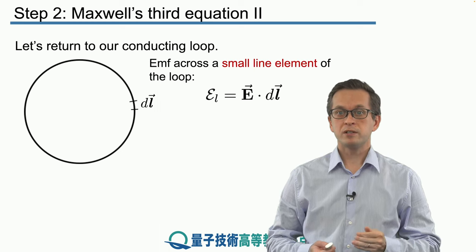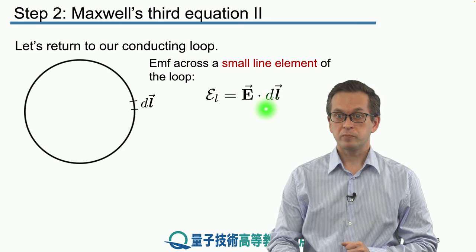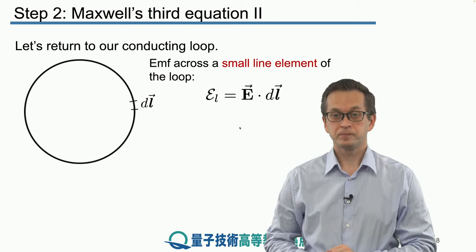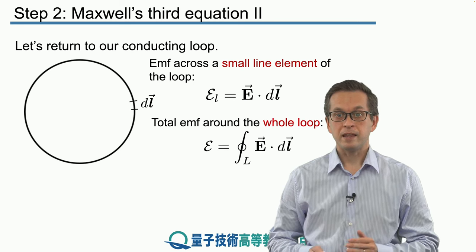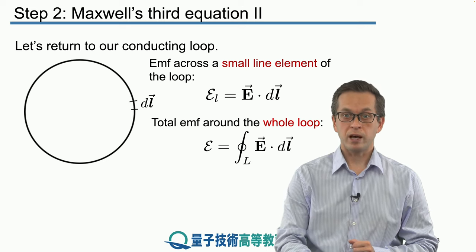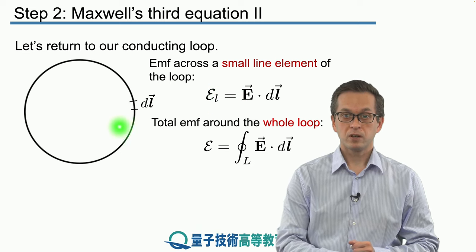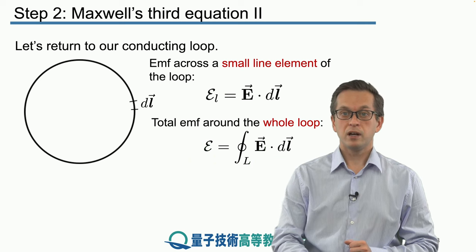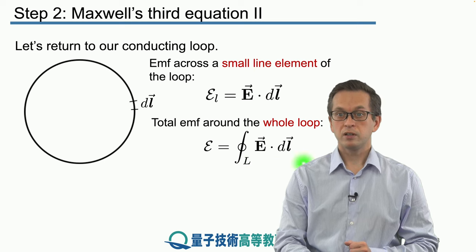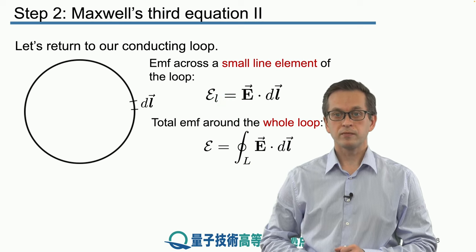And we ask, what's the EMF across this distance? Well, we can say that it's the electric field dot product with the segment of the loop dl. And now we want to know what is the total EMF across the whole loop. So all we have to do is add up all these tiny little contributions around the whole loop. So really what we are doing is taking the line integral around the closed loop, denoted by the capital L over here, of these small line segments given by this expression.